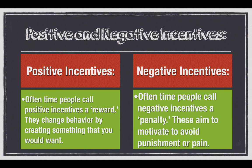On the flip side, we have negative incentives, which we often call a penalty. These aim to motivate people to avoid punishment or pain, and that punishment can be monetary. We see those no-littering signs on the highway — $500 fine, $1,000 fine, $10,000 fine. No speeding in construction zones — 15 years in jail. That's a negative incentive: you don't want to break the law because if you do, you'll be punished.